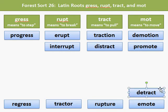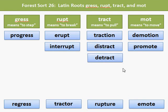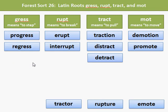Detract includes the root tract, meaning to pull. To detract is to pull away or to pull apart. Regress includes the root gress, which means to step. To regress means to step back, to make less progress.